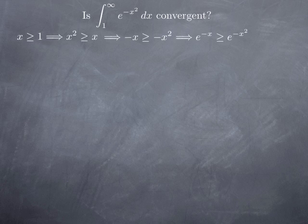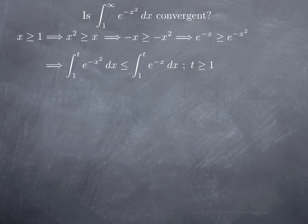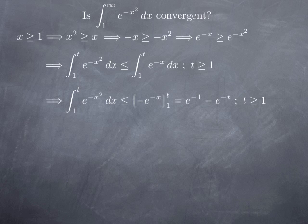Now, when we integrate on the same interval we preserve inequalities between functions. Therefore the integral from 1 to t of e to the negative x squared is bounded above by the integral from 1 to t of e to the negative x, as long as t is greater than or equal to 1. The integral on the right-hand side we can calculate using the fundamental theorem of calculus, since the antiderivative of e to the negative x is simply negative e to the negative x. Evaluating between 1 and t gives us e to the negative 1 minus e to the negative t.